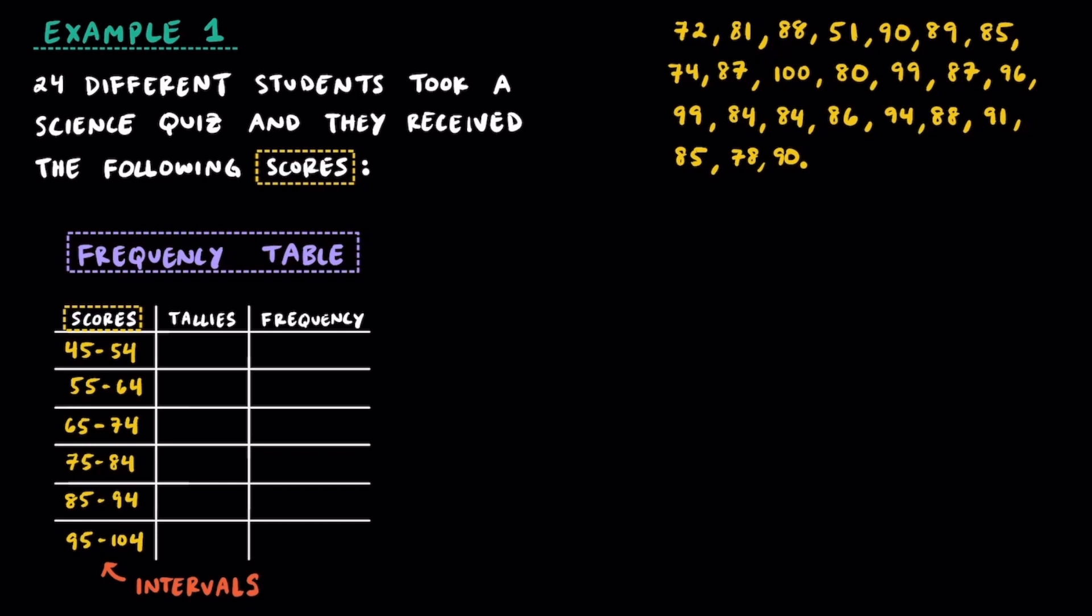Once you've created intervals that have at least one data point in the first and last interval, we're ready to go ahead and make some tally marks. Now it's time to go through each of the students' scores, and sort them into the scores that they got, or into their intervals.